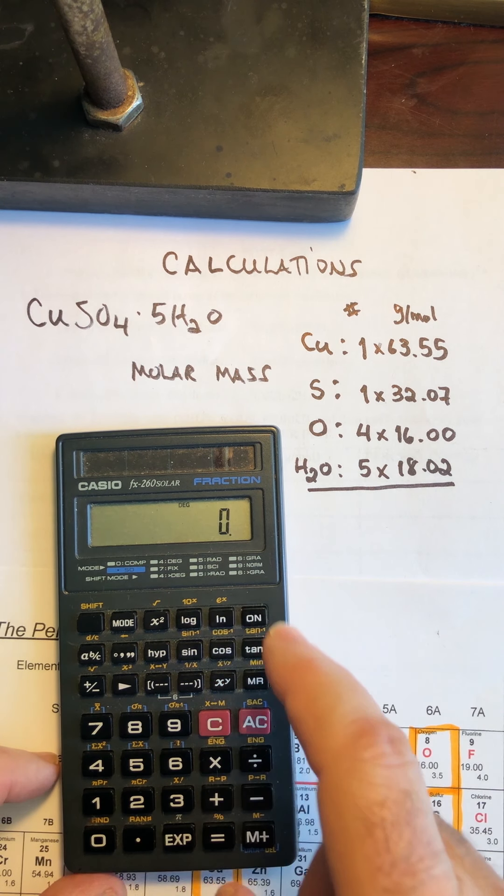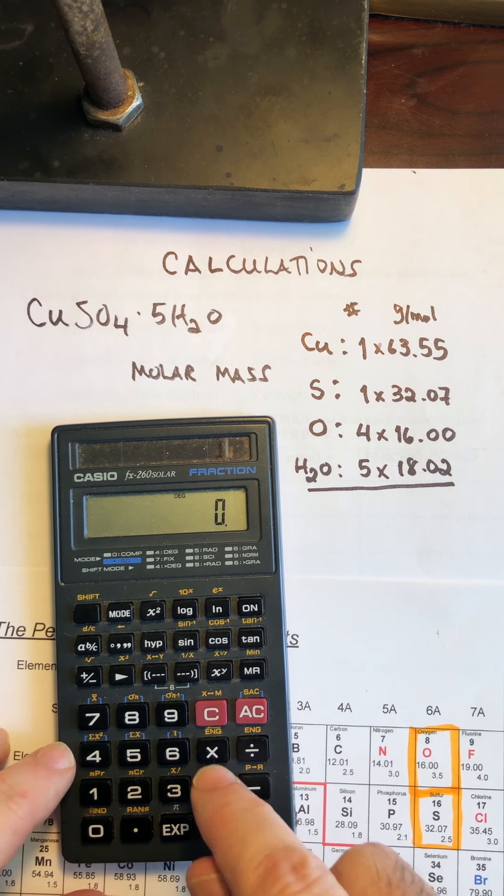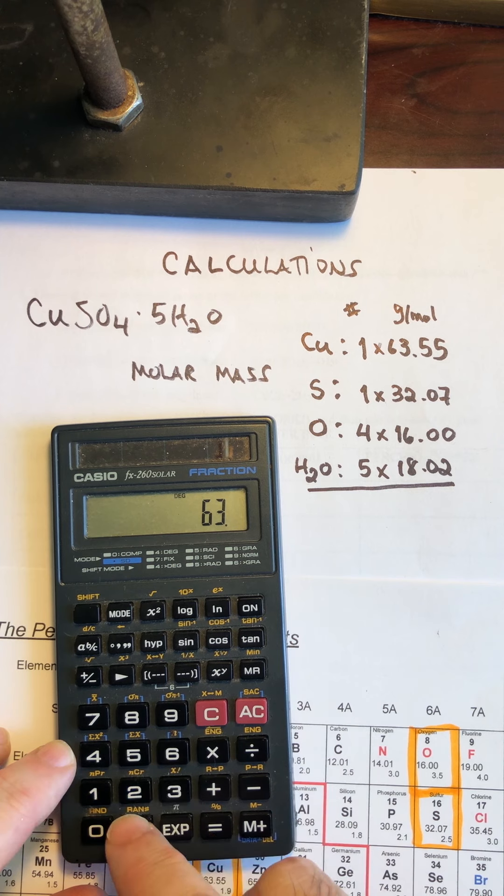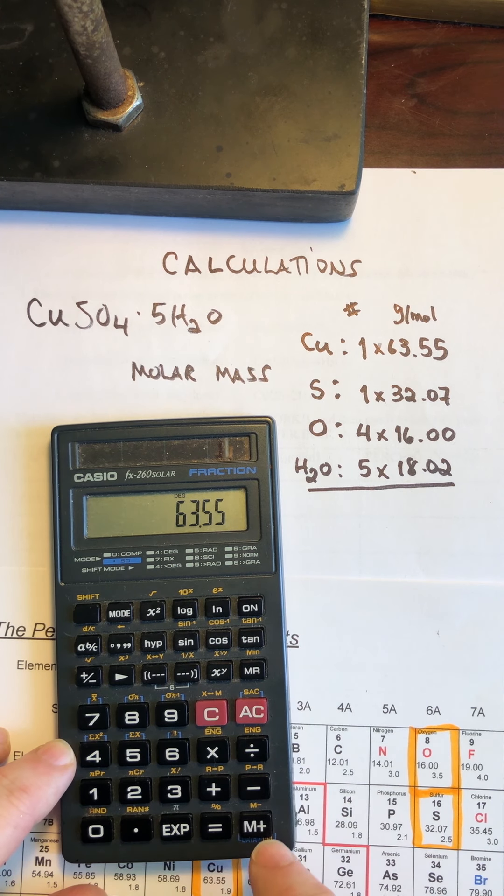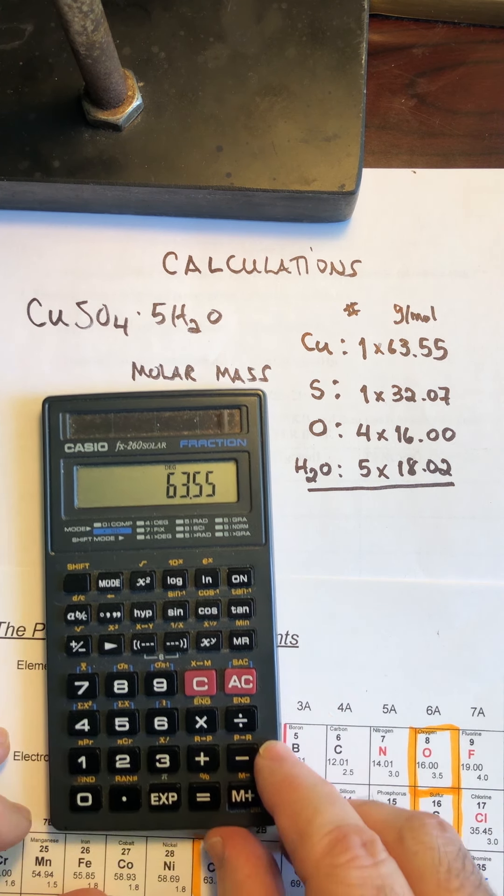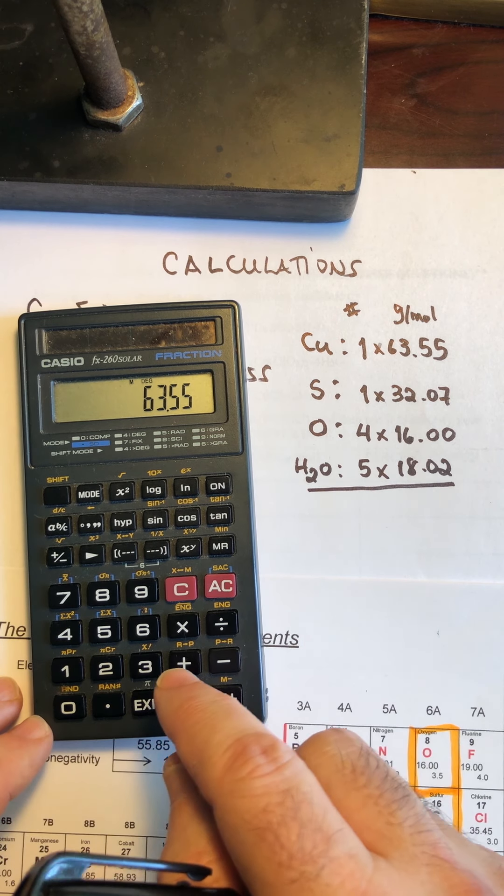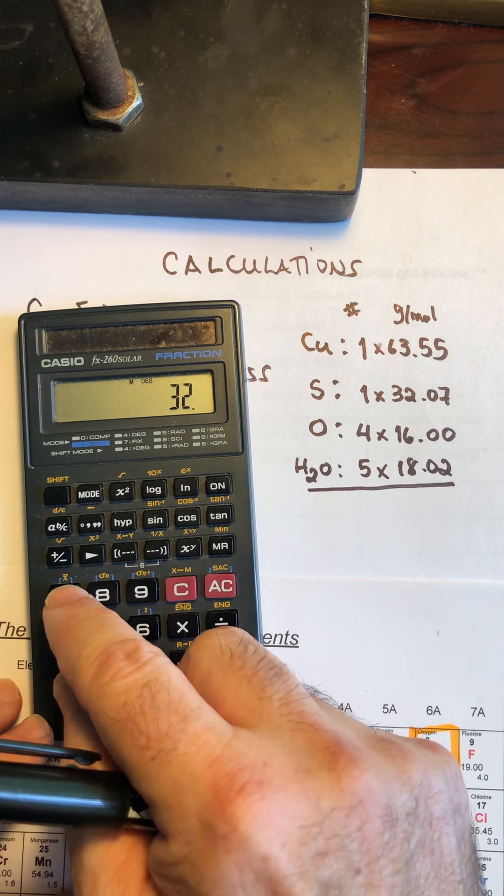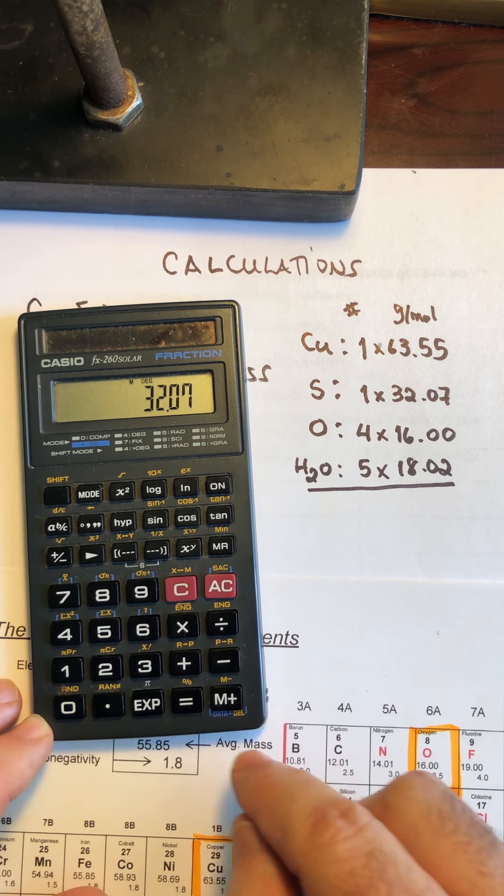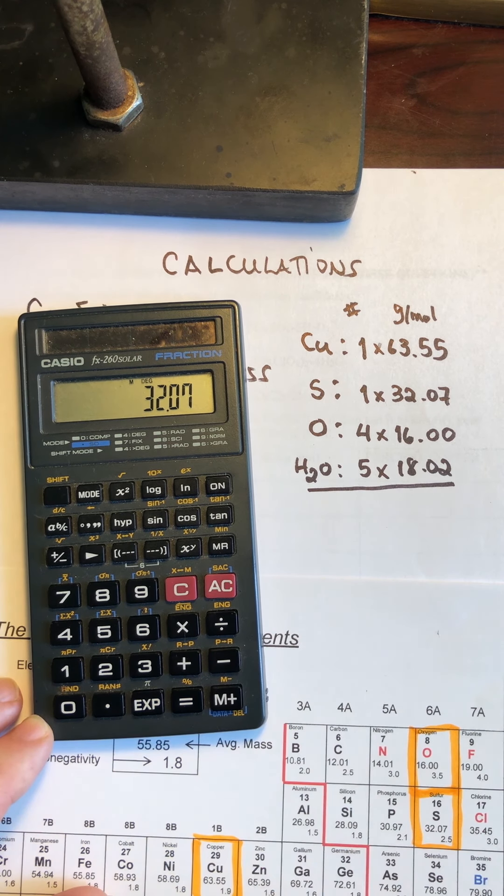And I believe that we have a calculator here. I'm going to go ahead and do it here. Let me clear out what I did earlier on. So I have 63.55 of copper. I'm going to put it in my memory here. And then I have 32.07 from sulfur. Put that in my memory.